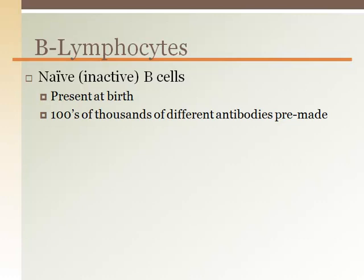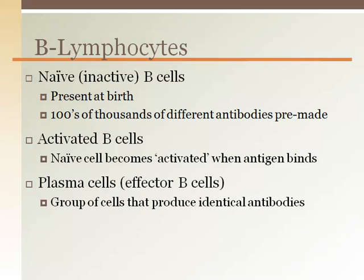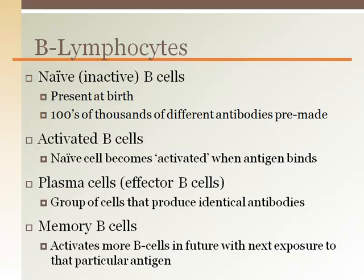B lymphocytes have many different subtypes, each with a different role. Naive or inactive B cells are present at birth. There are hundreds of thousands of different naive B cells, each with different antibodies on their surface. The antibodies on the surface each have a different shape that may match a potential antigen or invader. Activated B cells are naive B cells that have bound to an antigen. Activated B cells form plasma cells to make more of that same antibody and also form memory cells to remember that antigen any time it is encountered again throughout the person's lifetime.